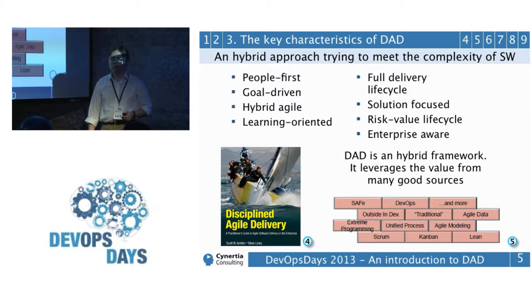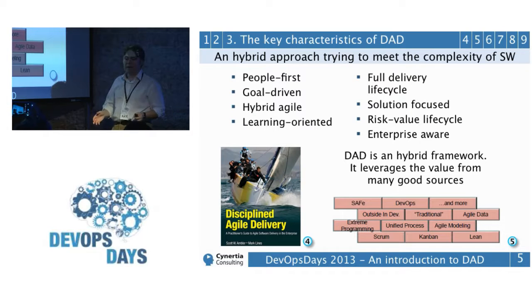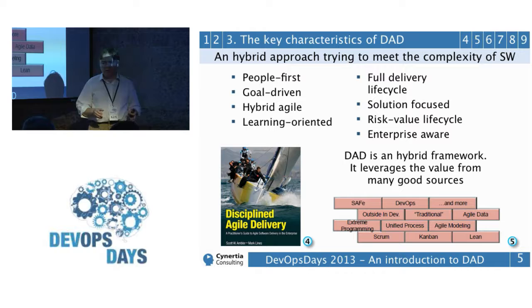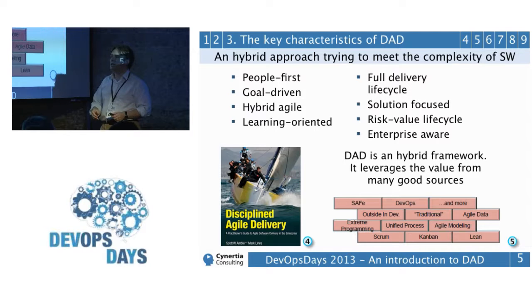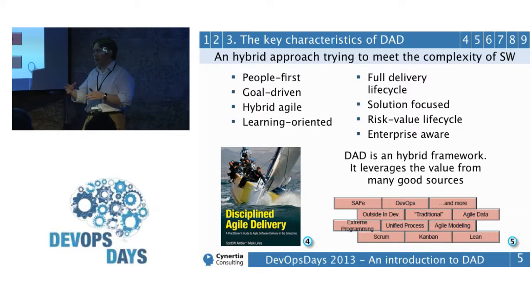Let's discuss the features of DAD. The first is people first — it follows the philosophy of the Agile Manifesto: teams must make decisions, and everything is not defined by processes. It's an agile methodology, not an old prescriptive one. It's goal-driven, not prescriptive — it tells you what to do across the three big phases of the lifecycle: inception, construction, and transition, and gives you patterns, but it doesn't dictate step by step like ITIL. It tells you what to do, but not how to do it.